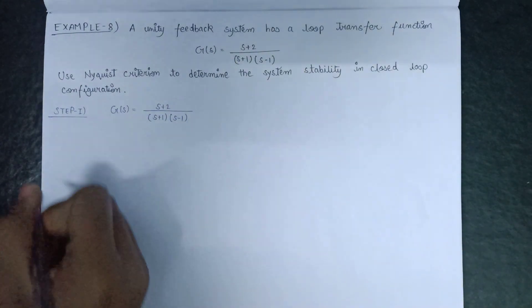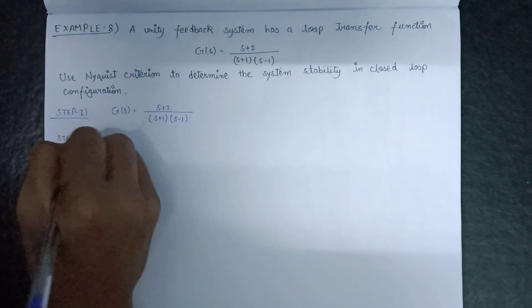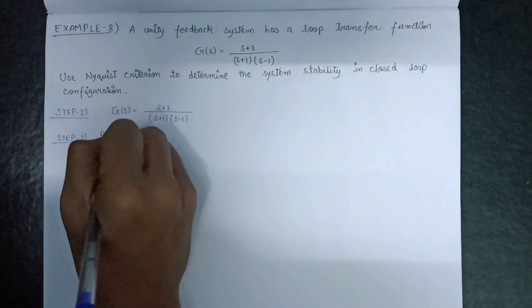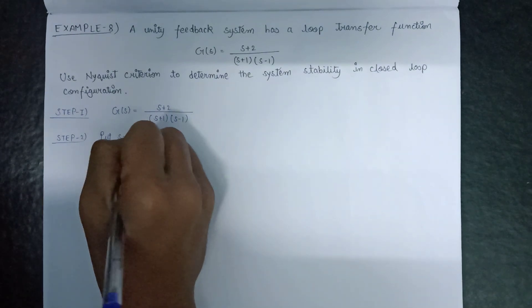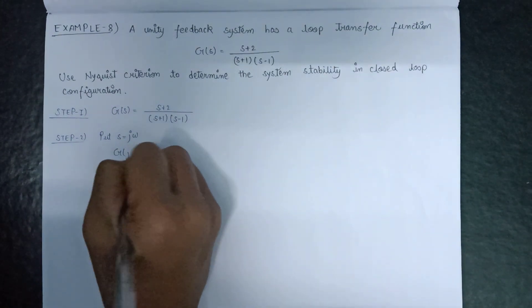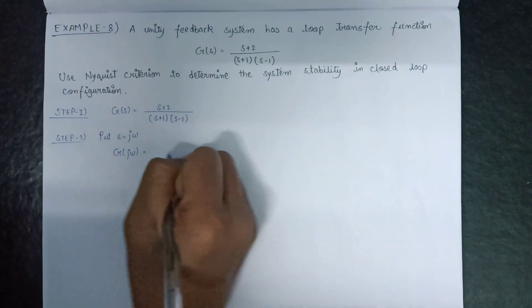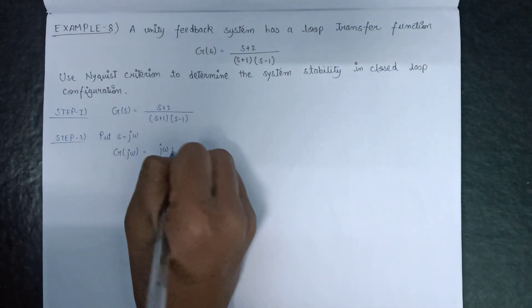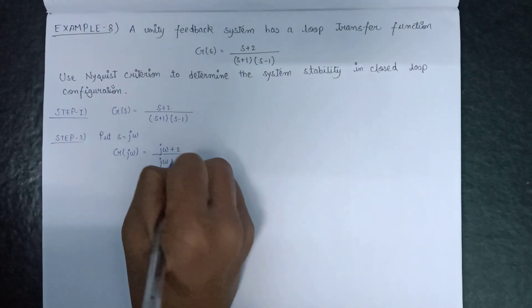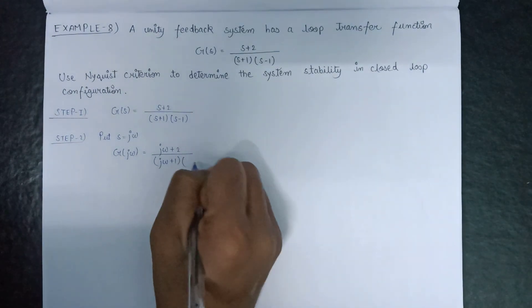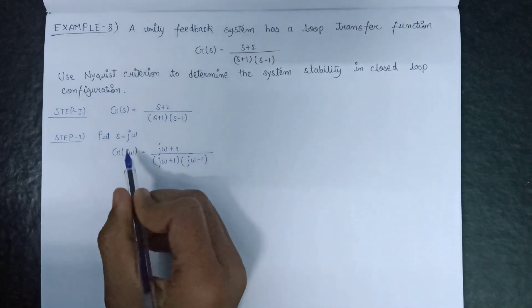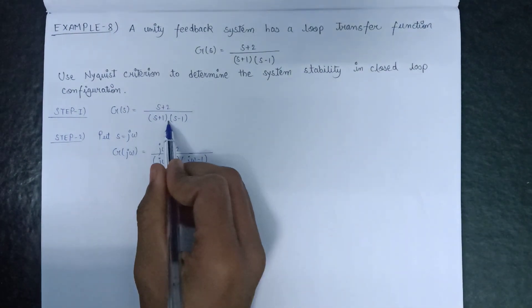Moving on to step number two — putting s = jω. On substituting s = jω, we get G(jω) = (jω + 2) / [(jω + 1)(jω - 1)].